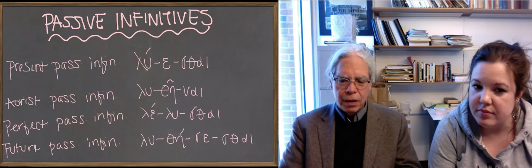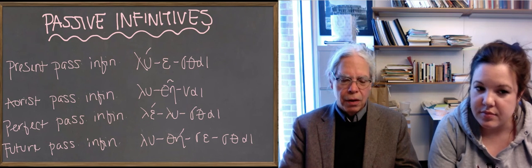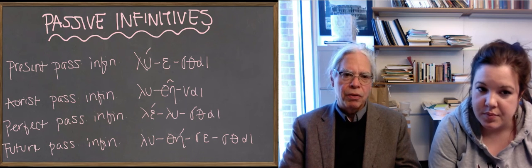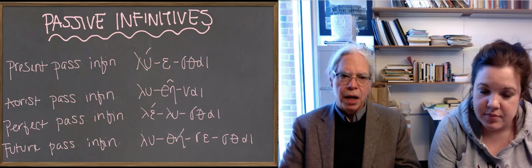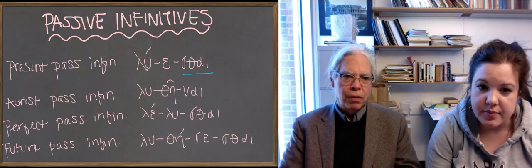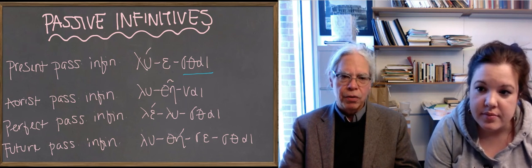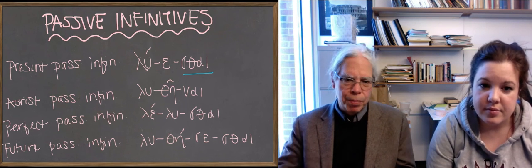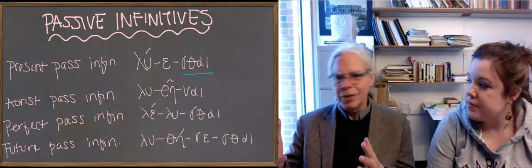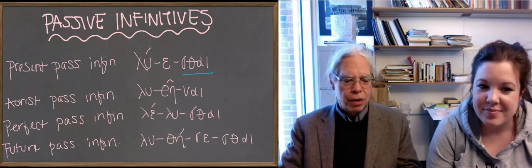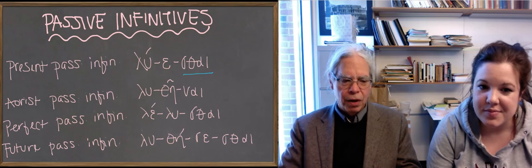Passive infinitives. The ending for passive infinitives, as you see in the present passive infinitive, is ψαι (psi). That is, sigma, theta, alpha, iota. The way to form a regular present passive infinitive is the thematic vowel for infinitives is always epsilon. It uses the epsilon thematic vowel and then you have ψαι.